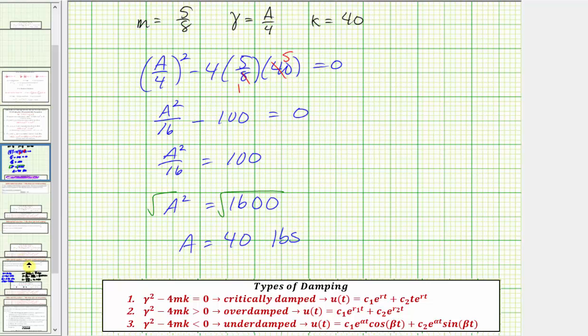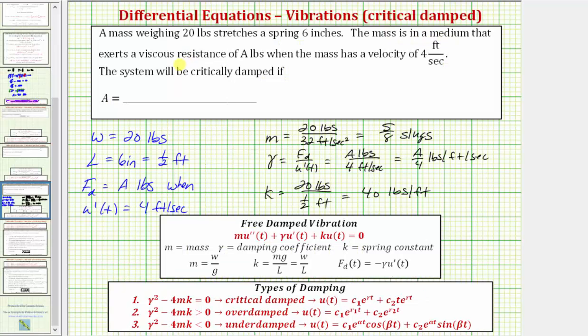So going back to our first slide, if the medium exerts a resistance of 40 pounds when the mass has a velocity of four feet per second, then the system is critically damped. Notice how that also tells us, if the resistance is greater than 40 pounds when the mass has a velocity of four feet per second, then the system would be overdamped, and if the resistance is less than 40 pounds, when the mass has a velocity of four feet per second, then the system is underdamped.